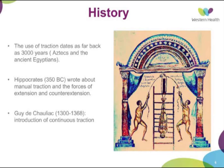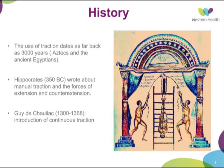In terms of the history, traction has been used about 3,000 years before Christ — that was in the time of the Aztecs and ancient Egyptians. This shows a vertical traction used by Greek people in the 2nd century after Christ. The Aztecs were using branches of trees for traction. The first person describing traction and extension was Hippocrates, who described it in 460 BC.